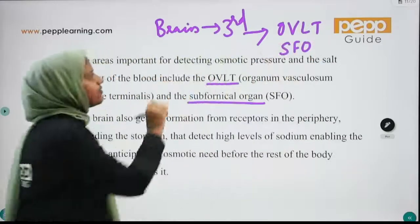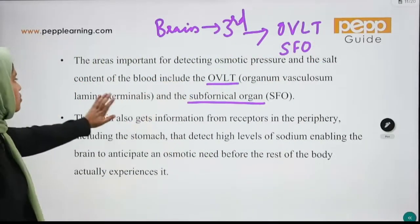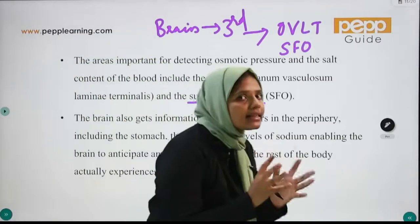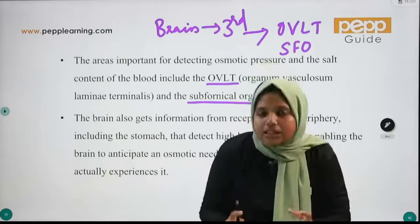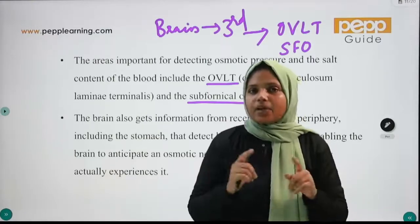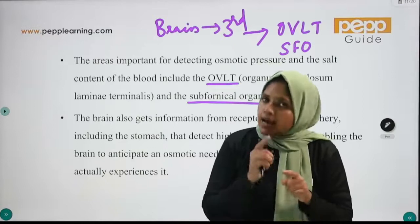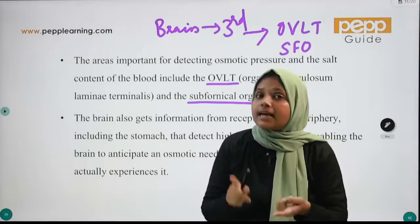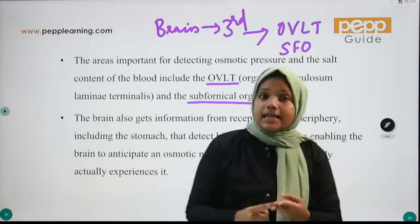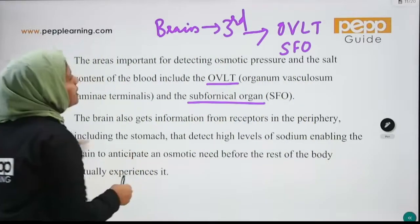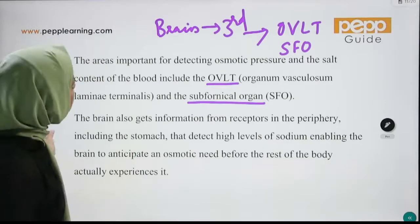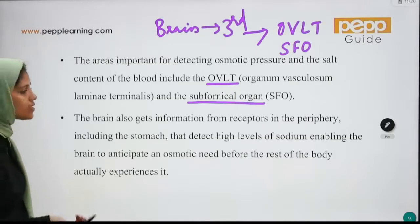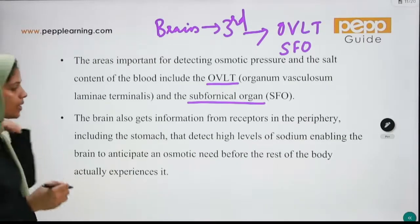The third ventricle houses the OVLT (organum vasculosum laminae terminalis) and the subfornical organs. These detect osmotic pressure. The brain also gets information from peripheral receptors including the stomach, which detects high levels of sodium, enabling the brain to anticipate an osmotic need.